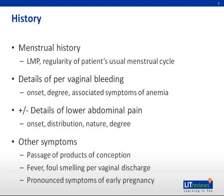History taking: It is important to take a basic menstrual history. The last menstrual period and the irregularity of the patient's menstrual cycle may give a clue to the gestation of the pregnancy. The details of the per-vaginal bleeding are important — the amount of bleeding, the onset, as well as symptoms of anemia such as postural giddiness, palpitations, syncope, and dyspnea, if excessive bleeding resulting in anemia is suspected.